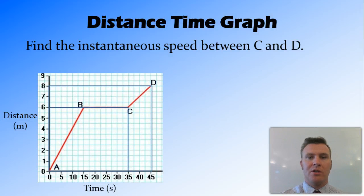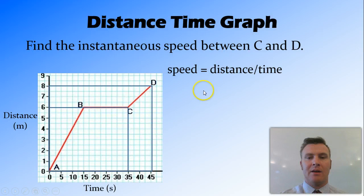But what I can also do is find the instantaneous speed, so the speed that's happening at a particular point. So in this case I'm going to look at the point from C to D. And we still use the formula speed equals distance over time, but we change it a little bit. We put this triangle in, and it's a Greek letter, but all it means is change.